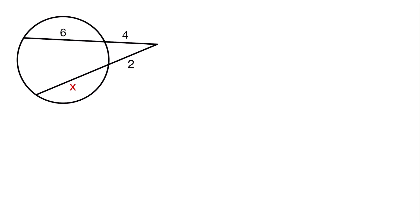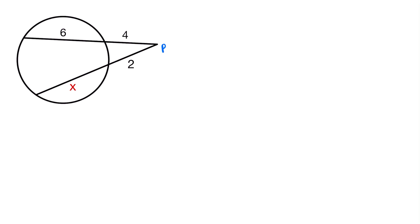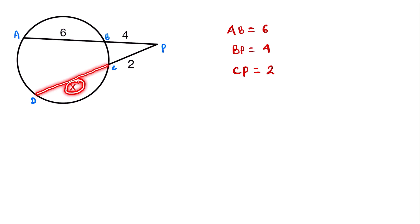In this question, two lines bisect the circle and meet outside the circle at point P. We name the points A, B, C, and D. The length of AB is equal to 6, the length of BP is equal to 4, the length of CP is equal to 2, and the length of CD is equal to x. We have to find the value of x.